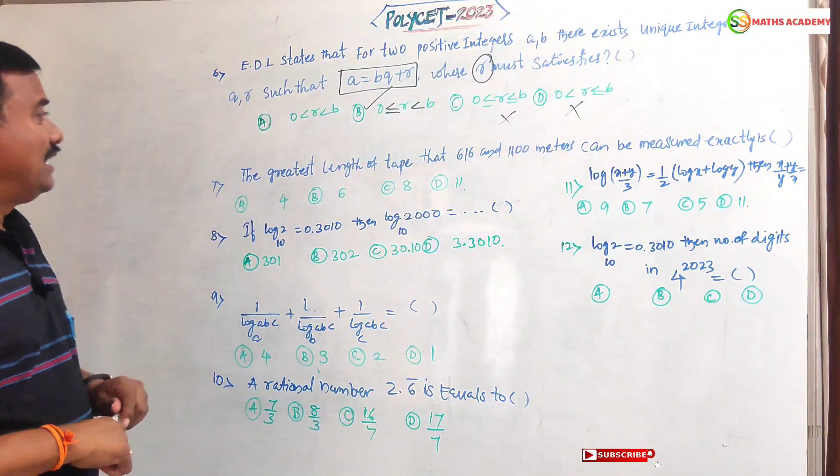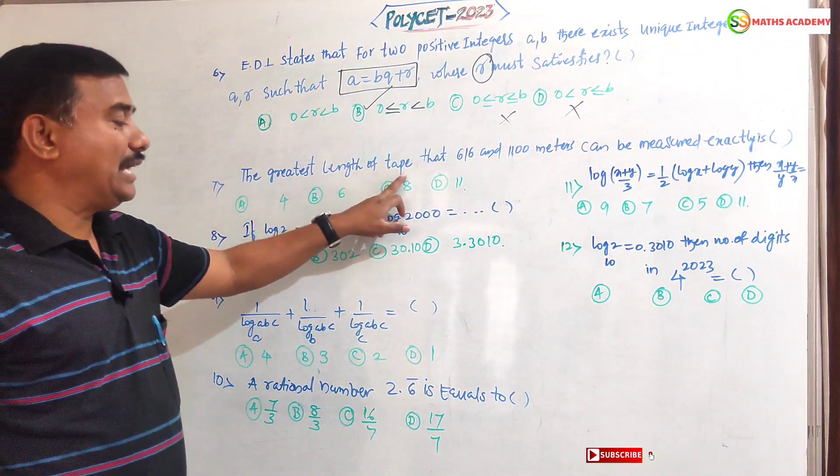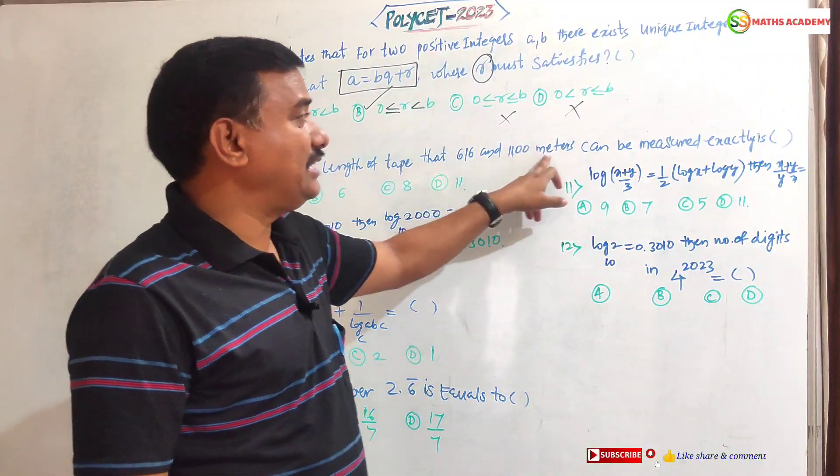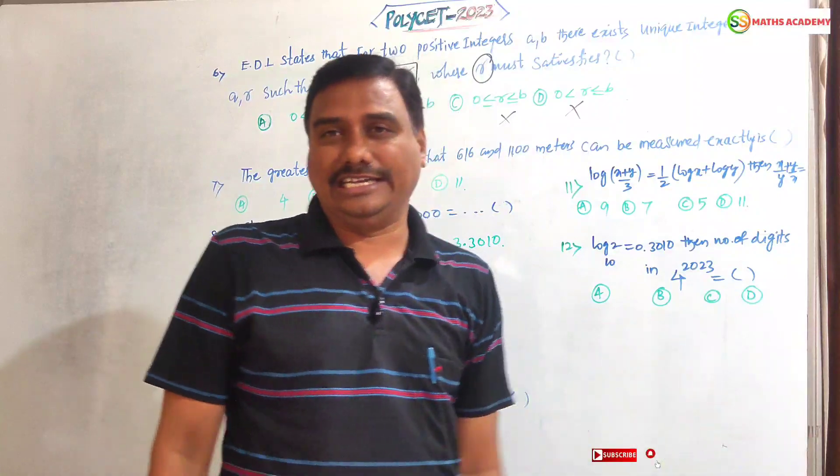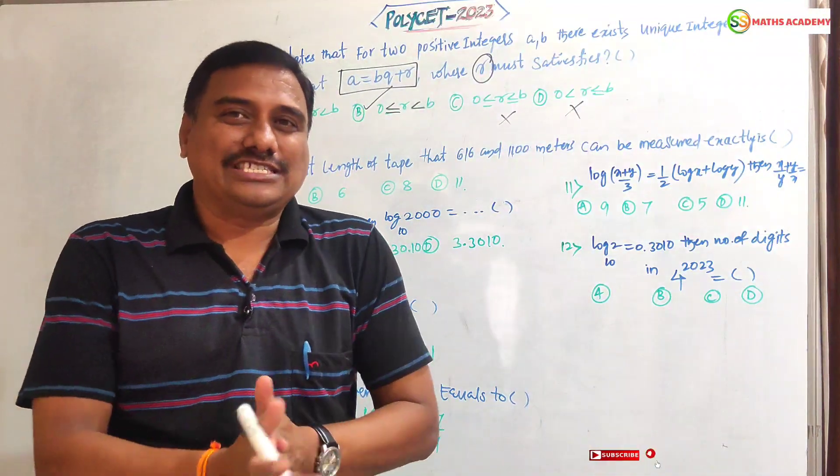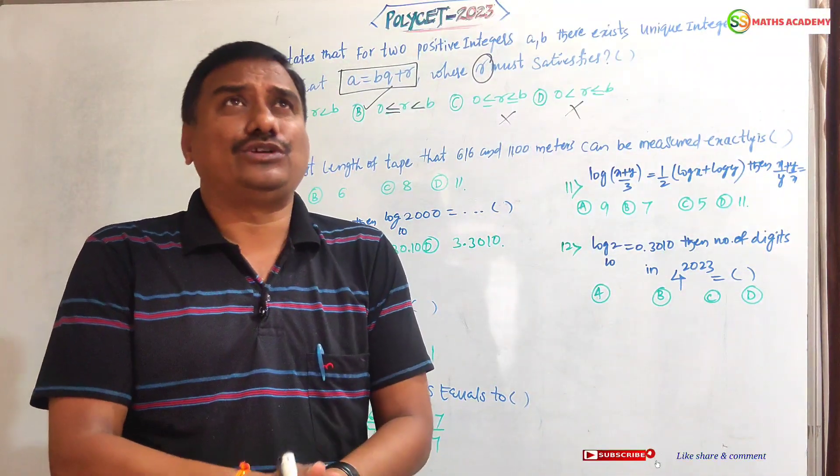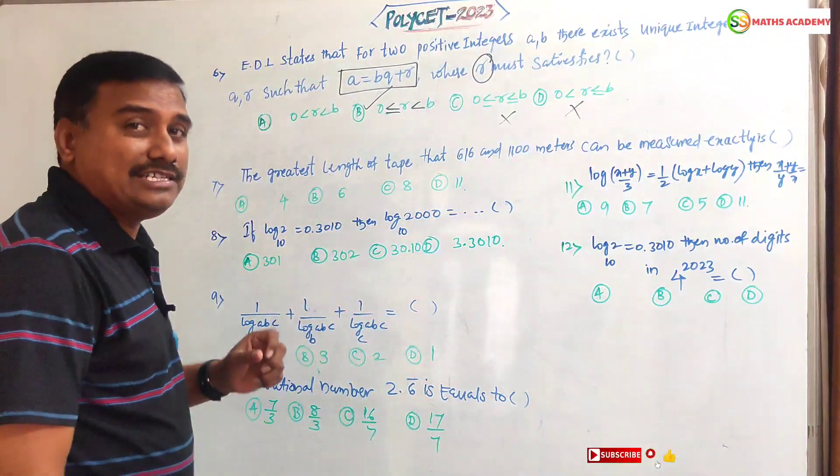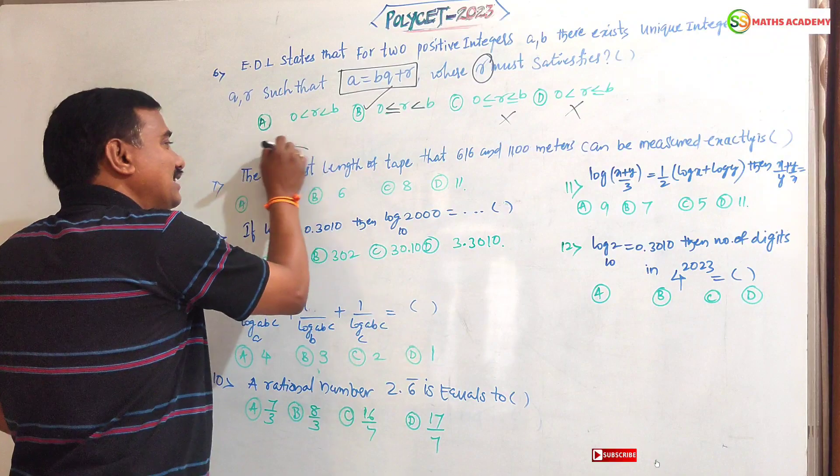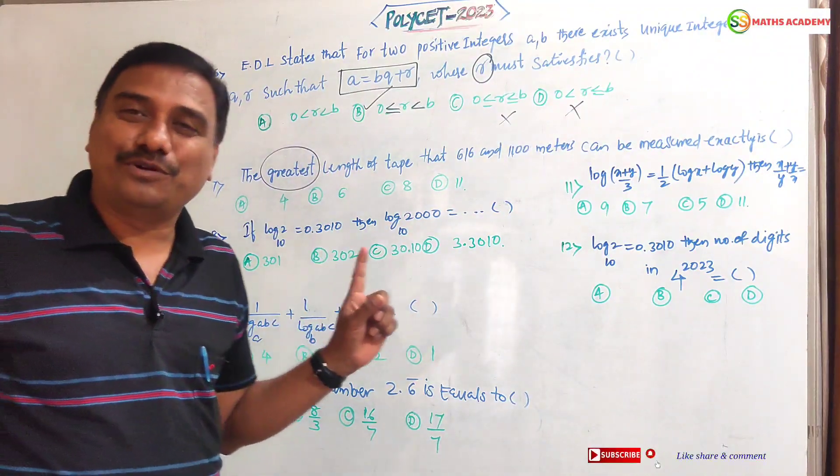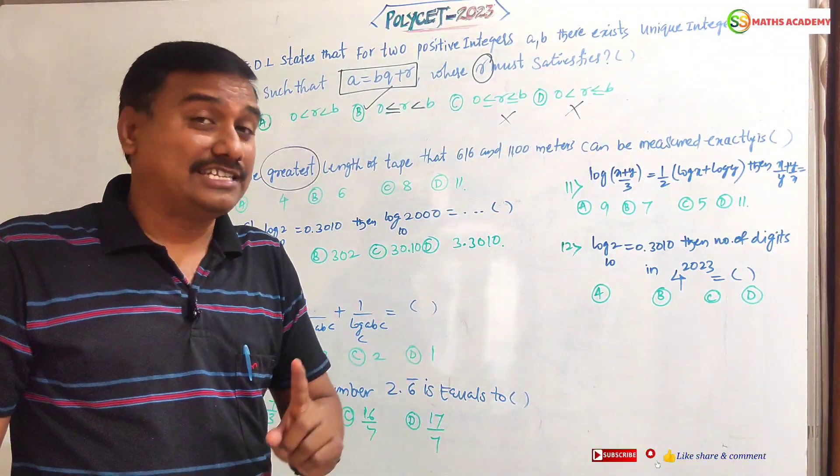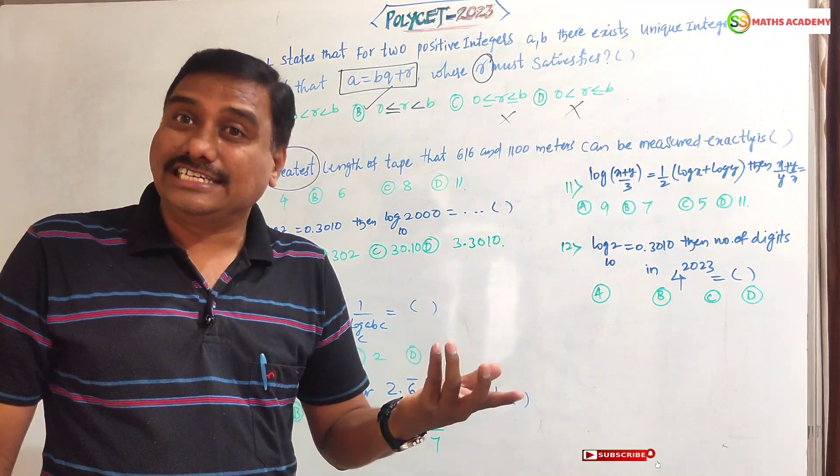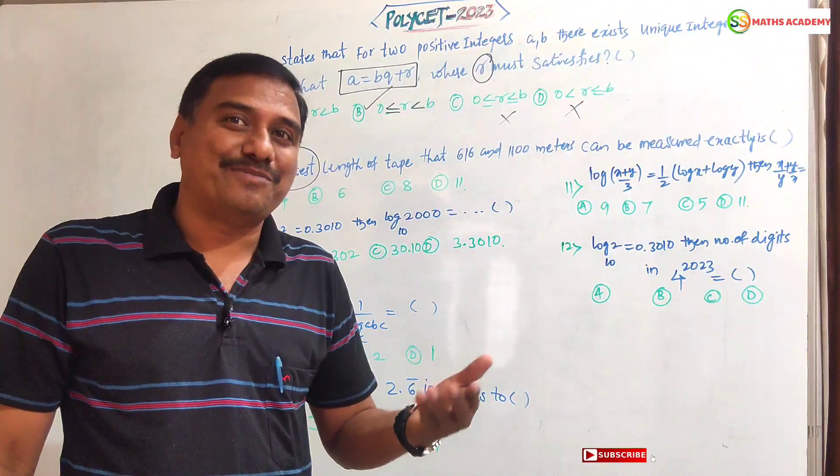Question number seven: the greatest length of tape that 616 and 1100 meters can be measured exactly. This kind of general questions are coming in the exam. You can keep one identification mark in that question. What is the important identification? This word 'greatest' means GCD, greatest common divisor, nothing but HCF.